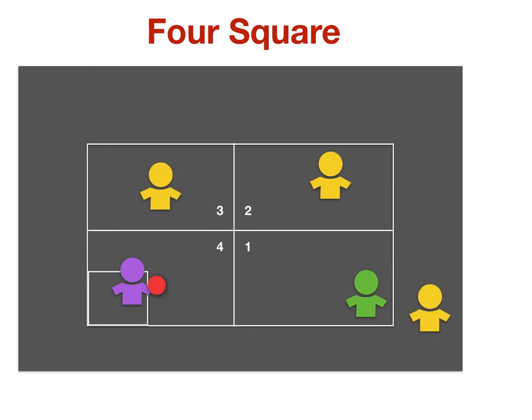Now when the ball is hit to you, you may hit it to any of the other three courts. In order to become the server, you have to get the server out or he or she will keep serving. In this case, player three got the server out.